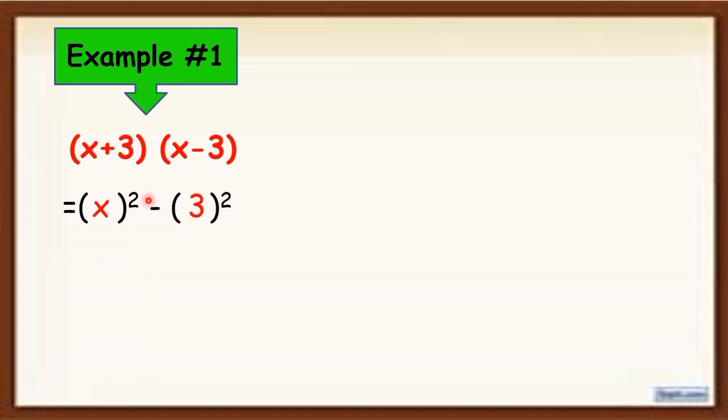So, simplify. x quantity squared will become x² minus 3 squared is equal to 9. So, the final answer is x² - 9. Easy right?